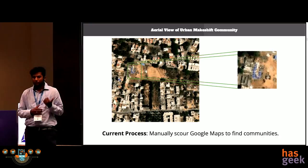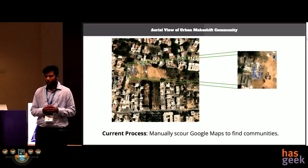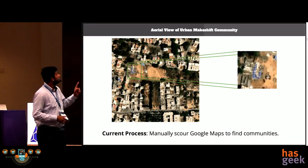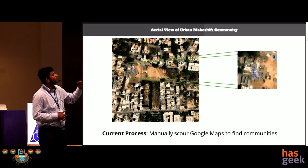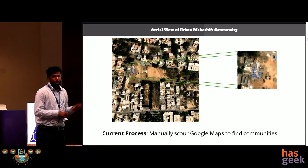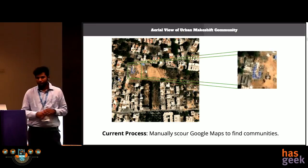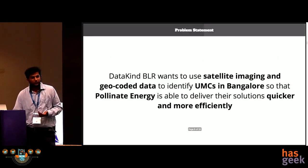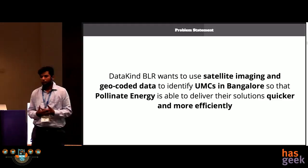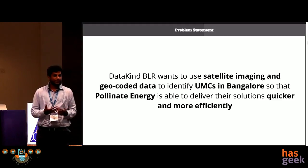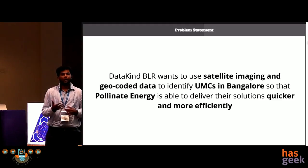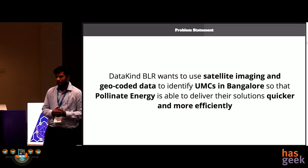Their current process involves using Google Maps, where they zoom into each location in Bangalore to find these urban makeshift communities. This is the aerial view — when you look at a satellite image, this is what a UMC looks like. The blue regions you see here are nothing but the UMCs from an aerial view. DataKind wanted to use satellite images and geocoded data in order to identify the UMCs automatically.